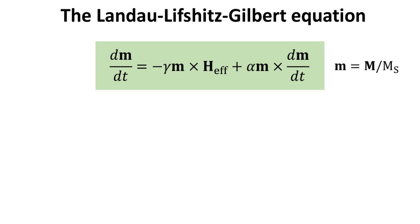The full LLG equation is explicitly written here for a single magnetic moment, whose unit vector is m and with magnitude Ms, which stands for the saturation magnetization when describing the total magnetization of a ferromagnetic material. The total rate of change of the magnetic moment, the left-hand side of the equation, is fully controlled by the total torque acting on it, the right-hand side of the equation.